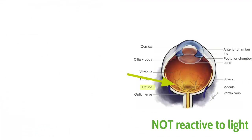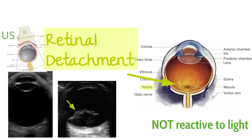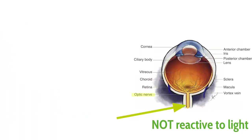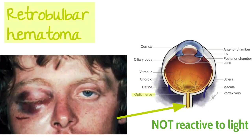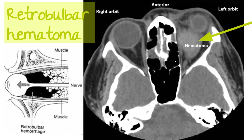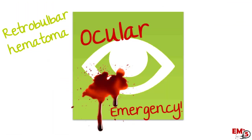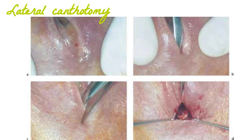For the retina, in the setting of blunt trauma, this would be concerning for retinal detachment, and you can actually look for this in the ED with ultrasound. For the optic nerve it could be more serious — in blunt trauma this would be concerning for a retrobulbar hematoma. This is where there's a buildup of blood in the orbit behind the eye, forcing the eyeball out, stretching the optic nerve, causing an afferent pupillary defect. This is definitely an ocular emergency: call ophthalmology right away and perform a lateral canthotomy.